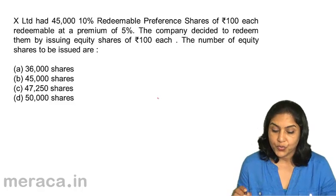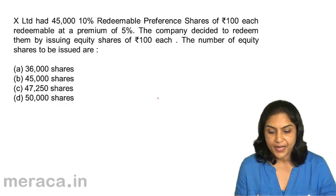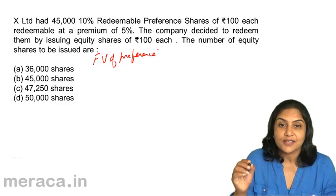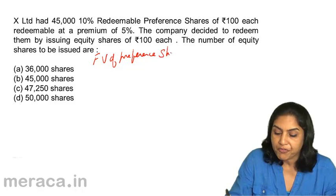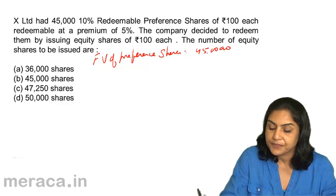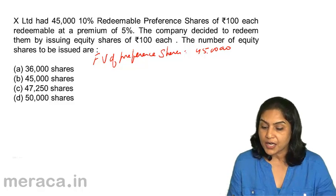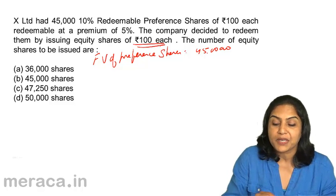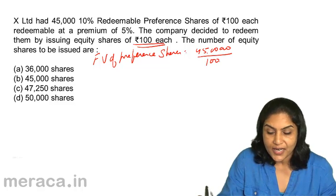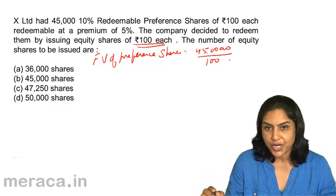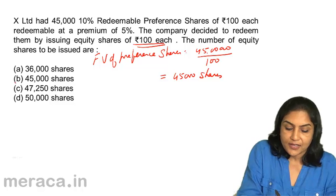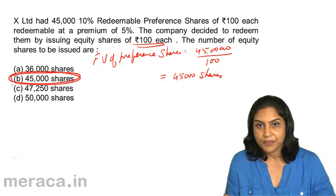What was our formula? We said it is the face value of preference shares to be redeemed — we do not consider the premium on redemption. The face value of preference shares to be redeemed in this case is Rs. 45,00,000. The company is redeeming this by issuing equity shares of Rs. 100 each at par. Therefore, 45,00,000 divided by 100 — that is the proceeds of fresh issue per share — gives us 45,000 shares. So our correct answer is B, 45,000 shares.